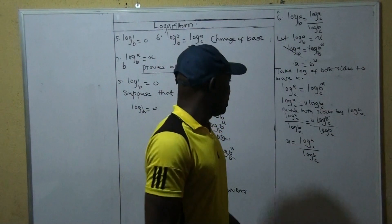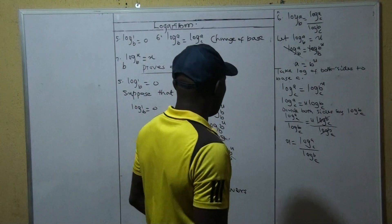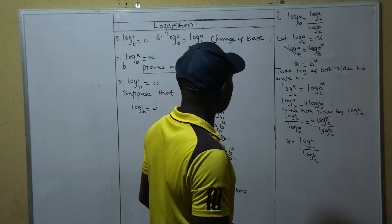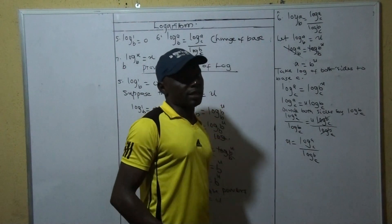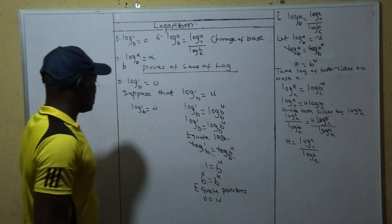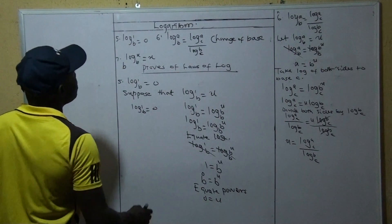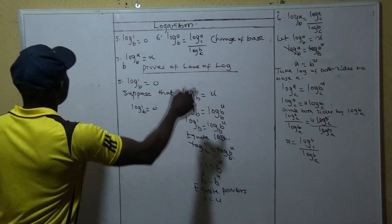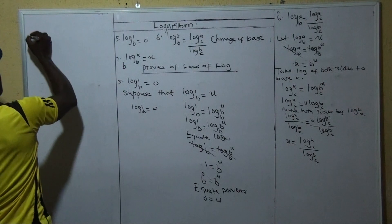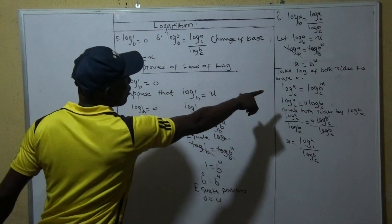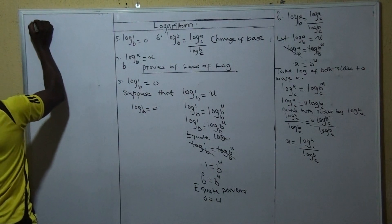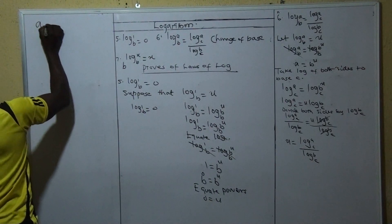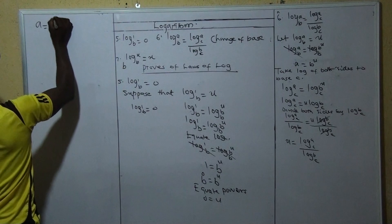But in case you want to change, I'm going to take another proof of this, another proof of this one, because we change to another base. But assume we continue from here, assume we want to, from where we, from here, from here we say A is equal to B raise power U.